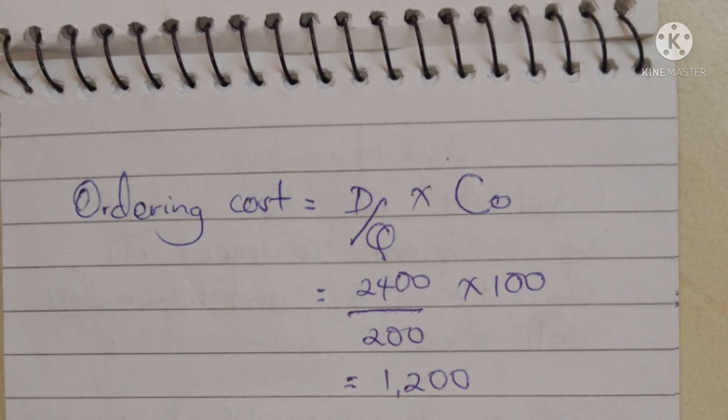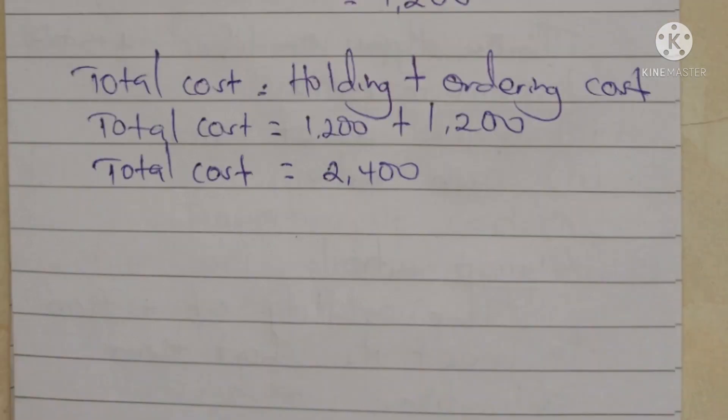Now the ordering cost. The formula is: D divided by Q, times ordering cost per unit (C₀), where D is the annual demand and Q is the EOQ. Substituting: 2,400 divided by 200, times 100. The calculator gives us an ordering cost of 1,200 shillings.